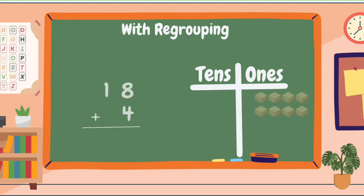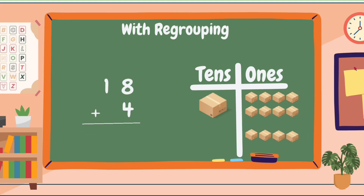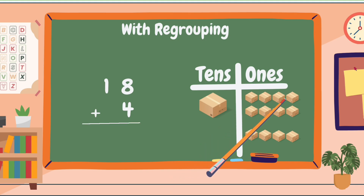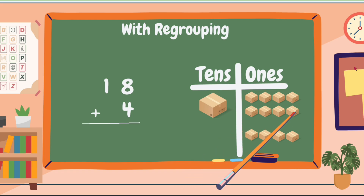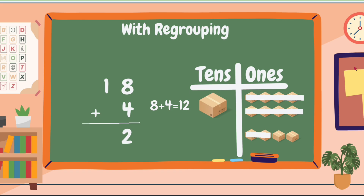Let's have another example: 18 plus 4. Just like what we have done earlier, we are going to add the ones first. In this example, our ones are 8 and 4. 8 plus 4 equals? Let's count the blocks in the ones column: 1, 2, 3, 4, 5, 6, 7, 8, 9, 10, 11, 12. Then 8 plus 4 is 12.